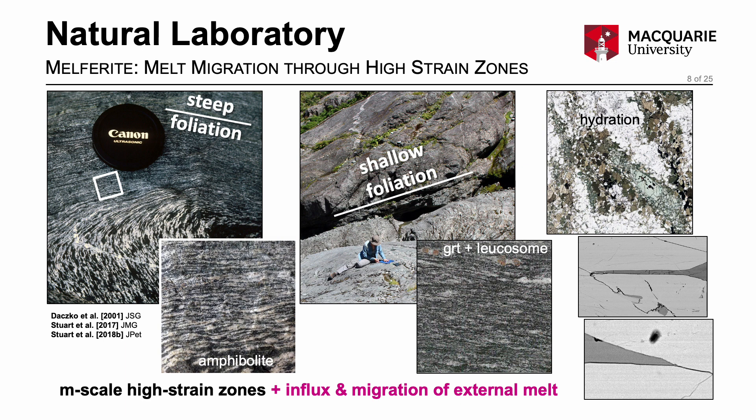The precursor rocks — the gabbroic gneiss and garnet granulite reaction zones — are deformed and hydrated within narrow metre-scale high strain zones of melphorite. These convert the granulite to amphibolite. We observe both steeply and shallowly dipping high strain zones, but we rarely see recognisable igneous components in outcrop. These might be leucosome lenses or syntectonic dikes inside the high strain zones.